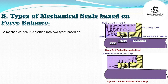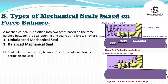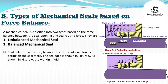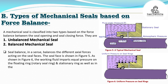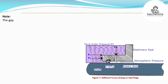Types of mechanical seals based on force balance: A mechanical seal is classified into two types based on the force balance between the seal opening and seal closing force. They are: unbalanced mechanical seal and balanced mechanical seal. Seal balance balances the different axial forces acting on the seal faces, as shown in Figure 5. As shown in Figure 6, the working fluid imparts equal pressure on the floating ring, rotary seal ring, and stationary ring as well as in the seal contact zone. Since the fluid pressure is identical, the load across the seal face depends on the area normal to the fluid pressure.